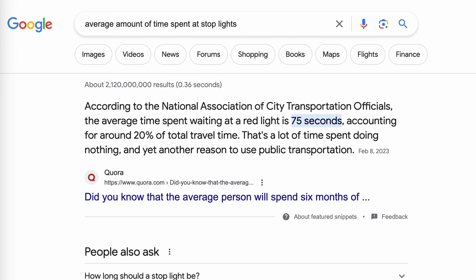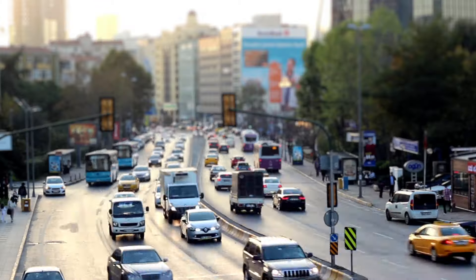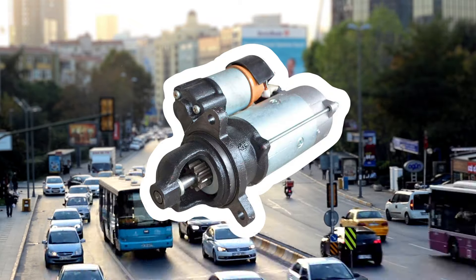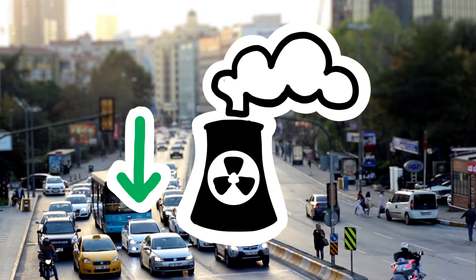That means it is possible to cut down pollution at stoplights, since the average time spent at a stoplight in the US is 75 seconds. So turning your car off while at a stoplight won't save you money if you have a car with a traditional starter, but could help cut down on pollution if you're at a light for a long time.